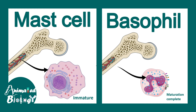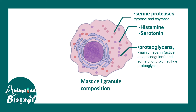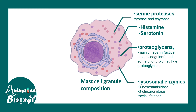Mast cell granule composition is quite diverse. It includes serine proteases like tryptase and chymase, as well as histamine and serotonin, which are mediators of allergic responses. It also contains proteoglycans like heparin, which is an anticoagulant, and several lysosomal enzymes like beta-hexosaminidase, beta-glucuronidase, and many others.